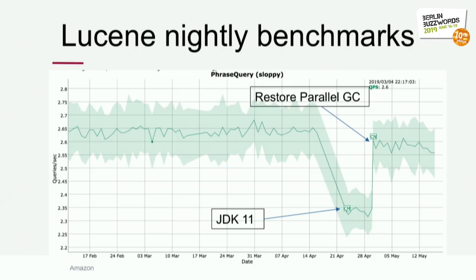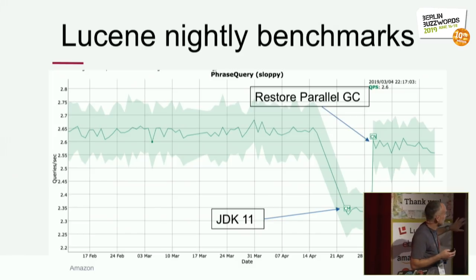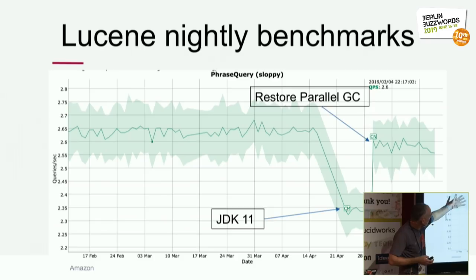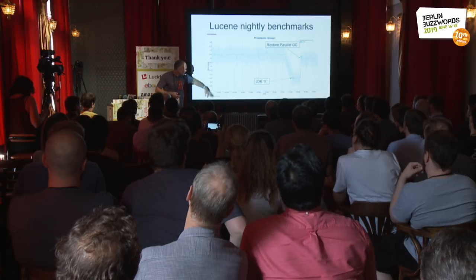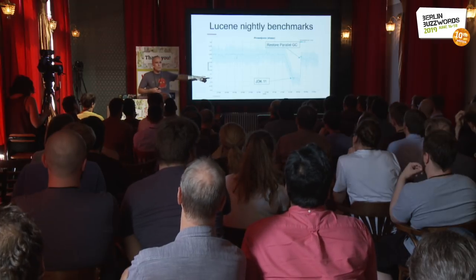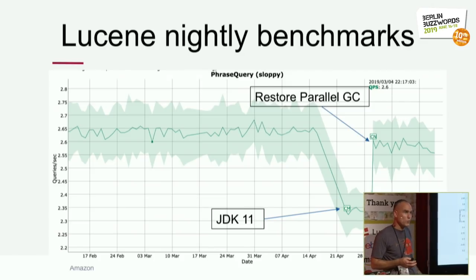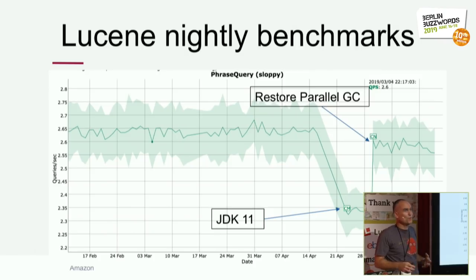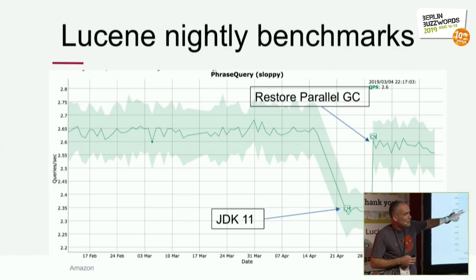This chart from Lucene's nightly benchmarks illustrates how much you need to pay attention to your garbage collector. It shows performance of a sloppy phrase query on a full Wikipedia index — a costly query. It was fine for months, but when Lucene's nightly benchmarks were upgraded to JDK 11, there was a substantial 12% drop in QPS. Uwe said it must be the garbage collector, and switching back to the throughput collector — parallel GC — restored quite a bit of performance, though not all of it.